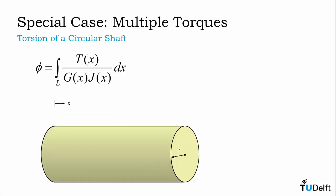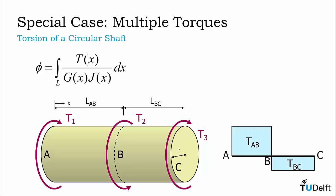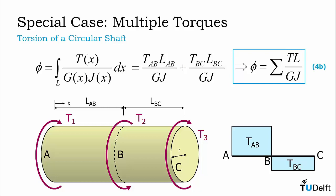The second special case is a uniform circular shaft subjected to multiple torques. If torques are applied at locations A, B, and C, the internal torque is no longer constant along the length of the shaft. However, if we draw the internal torque diagram for the shaft, we can see that the shaft becomes segmented into sections with uniform torque — in this case, section AB and section BC. We can thus consider the shaft as a series of uniformly loaded shafts and use the solution from the previous special case, adding the result for each segment. This can be further generalized as a summation of angles of twist from individual segments with uniform internal torque, material, and cross-section.